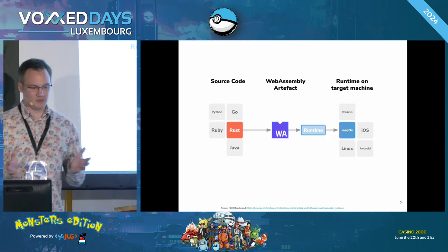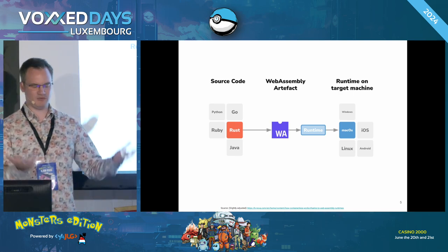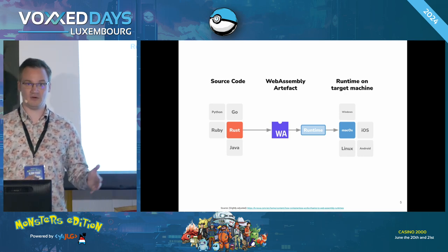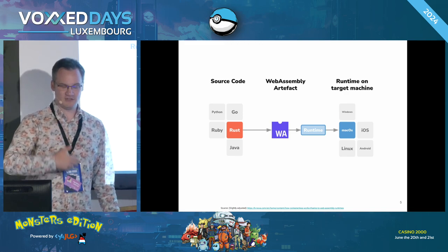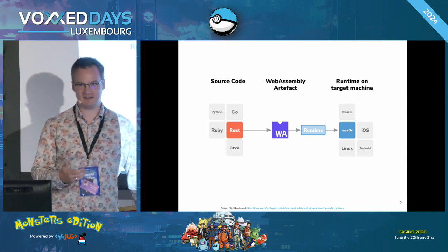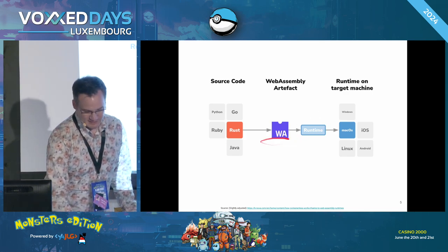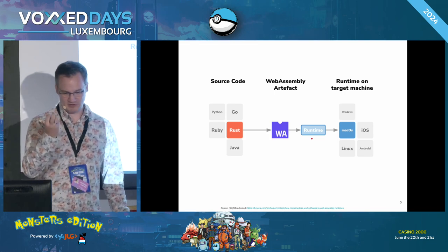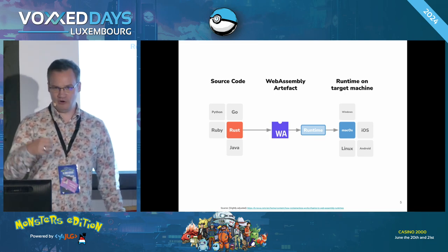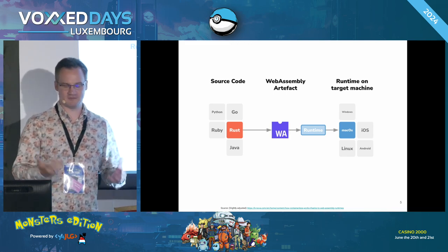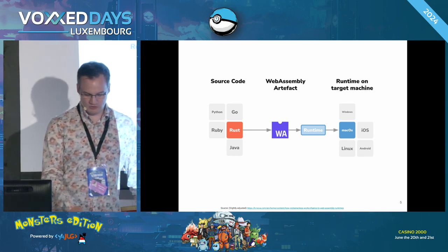How does it work? You write your program in source code in an arbitrary language, like Python, Go, Ruby, Rust, Java, or C, C++. Then you use a special compiler to translate your code into a WebAssembly artifact, or WebAssembly bytecode. This bytecode is then fed into a runtime that you run on a target machine for some operating system, or you embed a runtime in your application. With that, you can basically execute the logic that you compiled into WebAssembly.